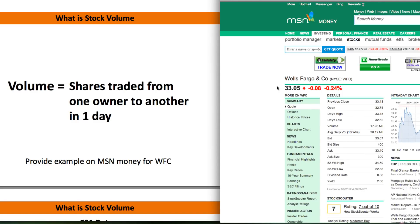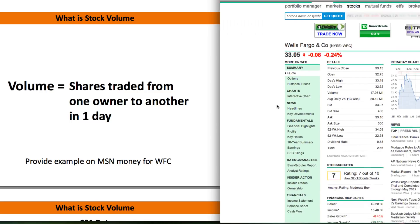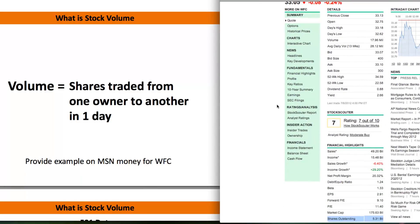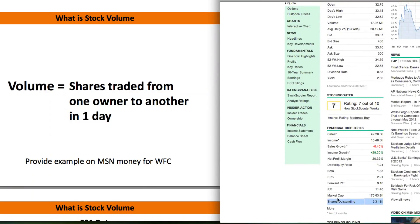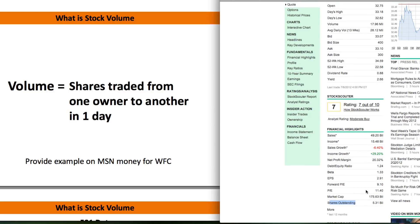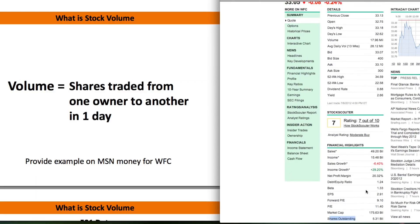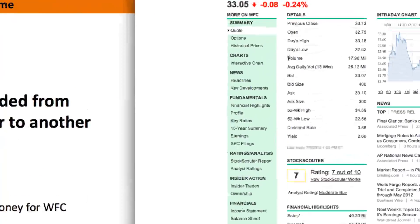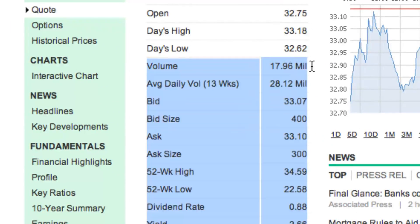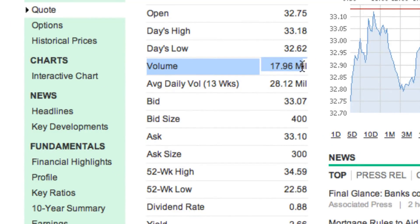Here we are back at the MSN Money page for Wells Fargo. As you remember, when we first came to this page we went down and we saw how many shares there were of Wells Fargo outstanding and found that there were 5.31 billion shares. Now when we go up and look at the volume, we can see that Wells Fargo had 17 million shares traded on this day.